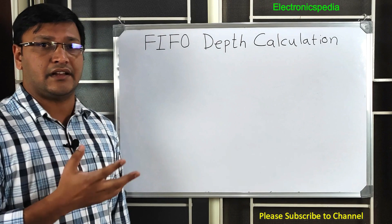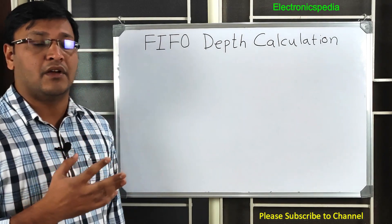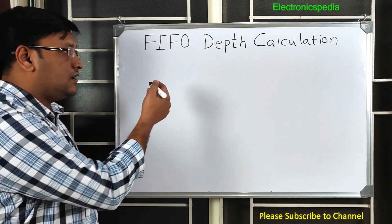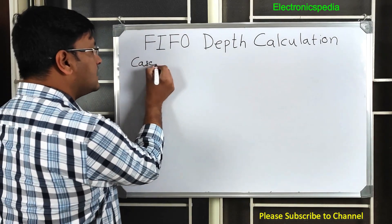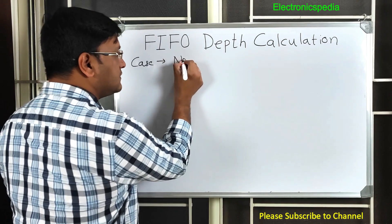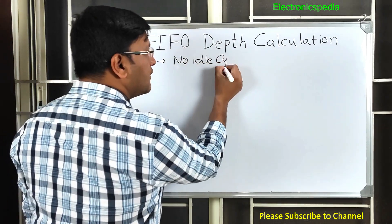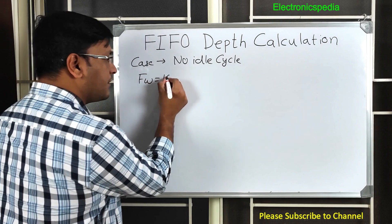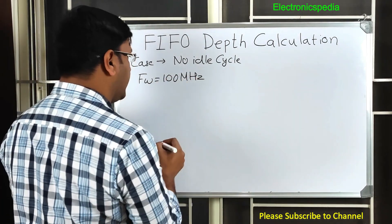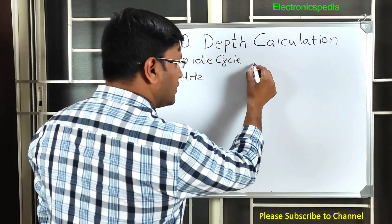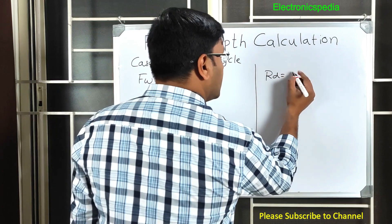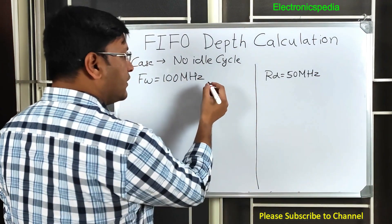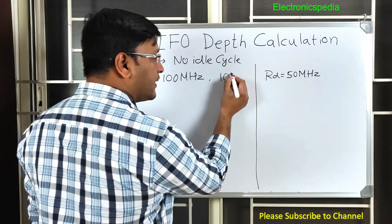Understanding FIFO depth is actually very easy — it's not a difficult concept and you don't need to memorize formulas; it's basically 10th grade mathematics. Let me take Case 1: no idle cycles. The write frequency is 100 MHz, the read frequency is 50 MHz, and we want to transfer 100 bytes of data.